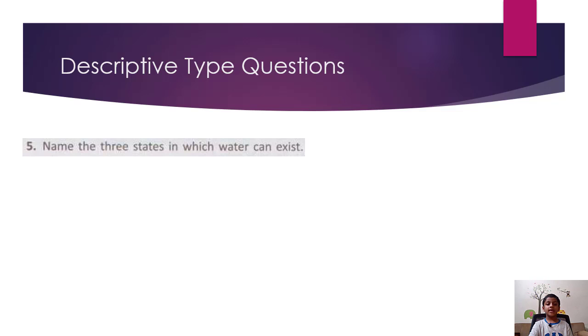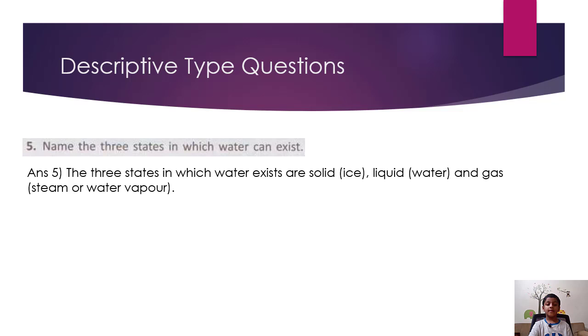Name the three states in which water can exist. The three states in which water exists are: solid (ice), liquid (water), and gas (steam or water vapor).